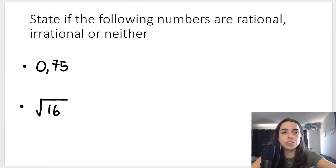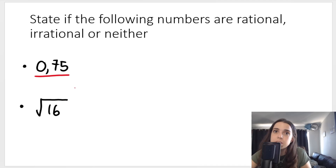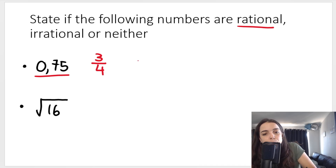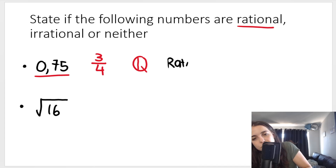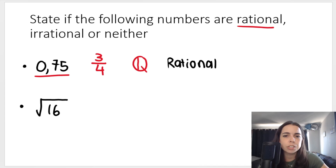We said that includes terminating decimals — decimals that stop. This decimal definitely stops. Another way to write this would be three over four, so this is definitely a rational number. Remember the symbol for rational is the Q, but if you don't use symbols in grade eight or nine, you just write rational. Remember 0.75 is not an integer, it's not a whole number, it's not a natural number — it's just a rational number, just a terminating decimal.